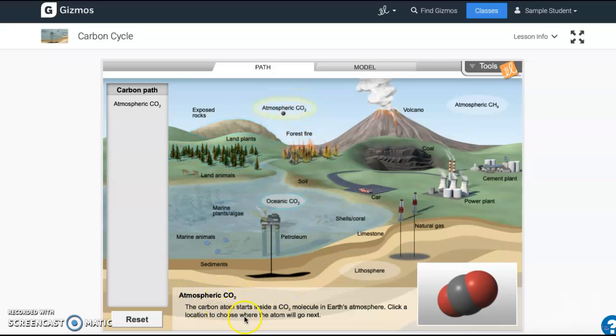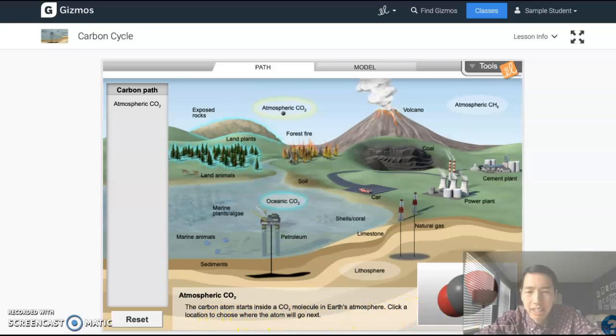So we're starting at atmospheric CO2, and the bottom here just tells you what atmospheric CO2 means. The carbon atom starts inside a CO2 molecule in Earth's atmosphere. Click a location to choose where the atom will go next.